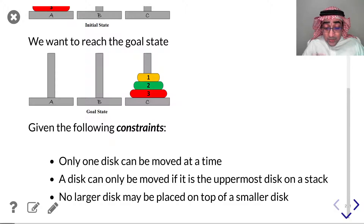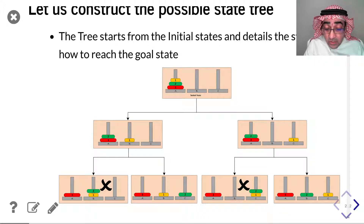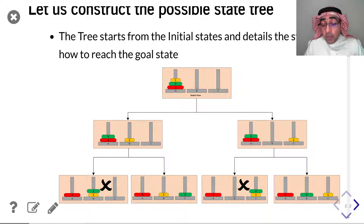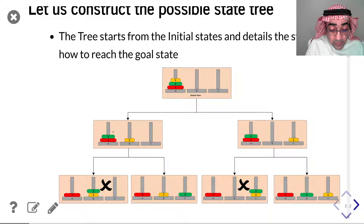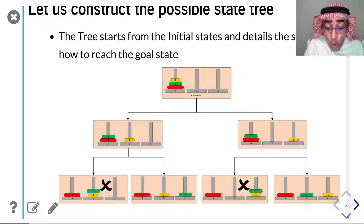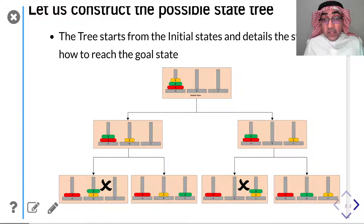How are we going to solve this problem? We will construct something called the goal tree. We start with our initial state — this is where the game actually starts, where all the disks are in pin A. Now given the constraints that I can only move the top disk and I can only move one disk at a time, the top disk is number one. The next state has two options: I can move disk number one to pin B, or I can move disk number one from pin A to pin C.